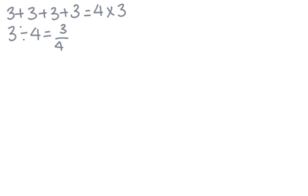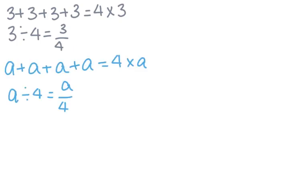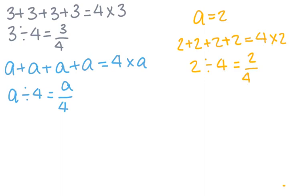Now we're going to look at one more example using addition, multiplication, and division. The two expressions are: 3 plus 3 plus 3 plus 3 equals 4 times 3, and 3 divided by 4 equals 3 over 4. If we replace the 3s with the letter A, our expressions now read: A plus A plus A plus A equals 4 times A, and A divided by 4 equals A over 4. Using A equals 2, our expressions read: 2 plus 2 plus 2 plus 2 equals 4 times 2, and 2 divided by 4 equals 2 over 4.